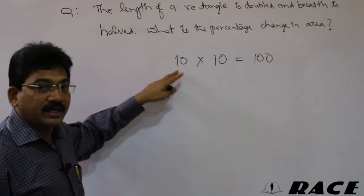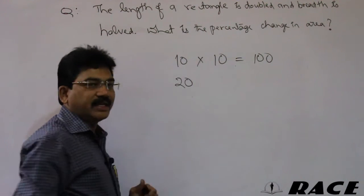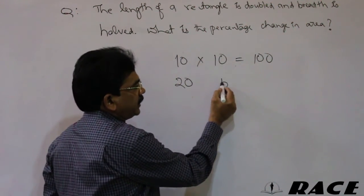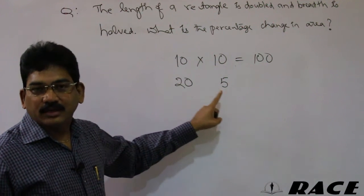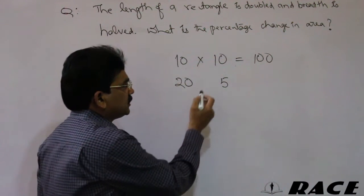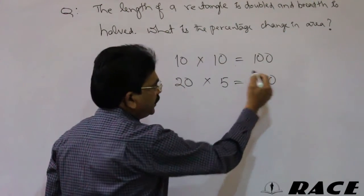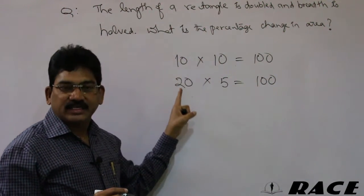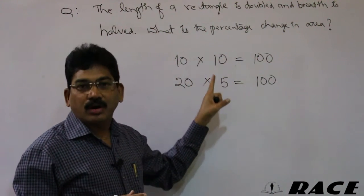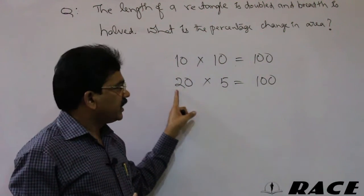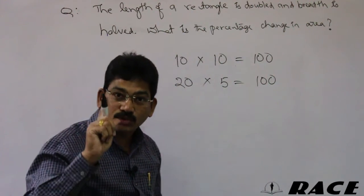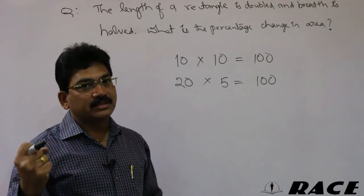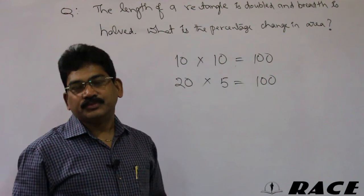The length is doubled: 10 becomes 20. The breadth is halved: 10 becomes 5. New area = 20 × 5 = 100. The area is the same as before, so there is no change in the area when the length is doubled and breadth is halved.